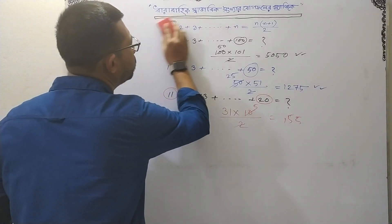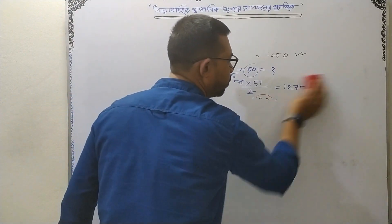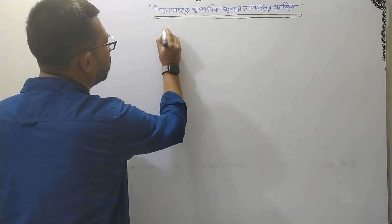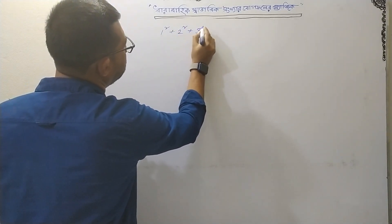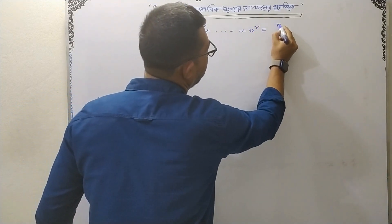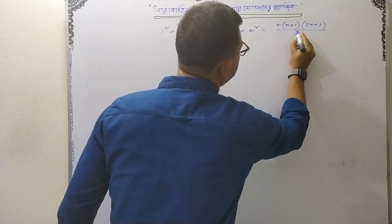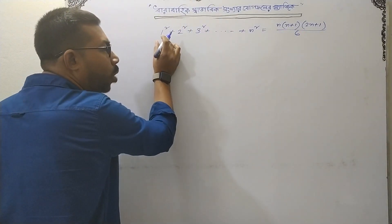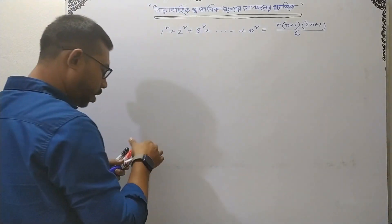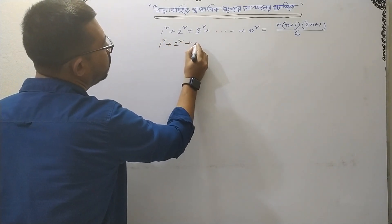1 squared plus 2 squared plus dot dot dot plus n squared. This is n into n plus 1 into 2n plus 1 divided by 6. This is n into n plus 1 divided by 2. This is 1 square plus 2 square plus 3 square plus dot dot dot plus n square.